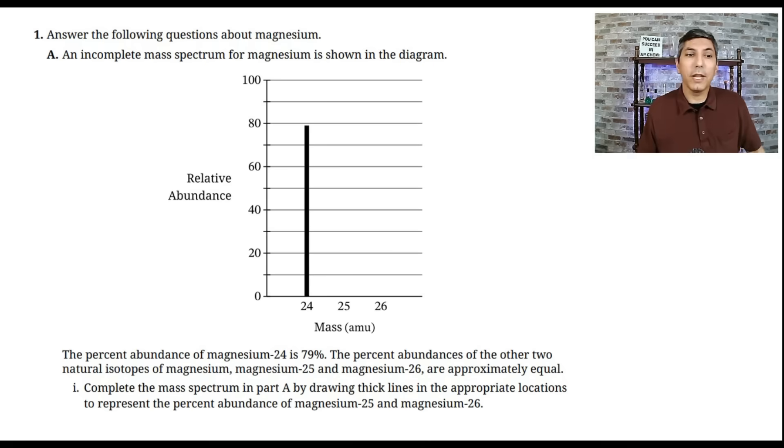Question one pertains to magnesium and compounds containing magnesium. So here in part A, it says we have an incomplete mass spectrum for magnesium shown in the diagram. It says that the percent abundance for magnesium-24 is 79%. The percent abundances of the other two natural isotopes of magnesium, magnesium-25 and 26, are approximately equal. And it tells us to complete the mass spectrum in part A by drawing thick lines in the appropriate locations to represent the percent abundance of magnesium-25 and magnesium-26.